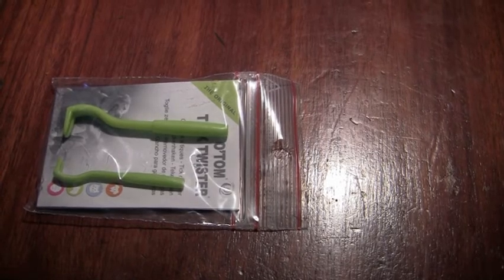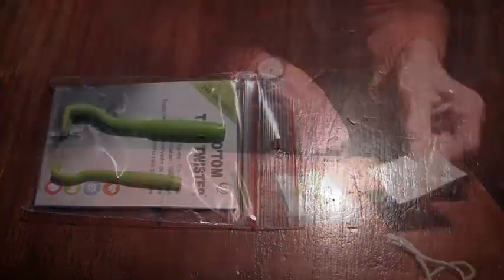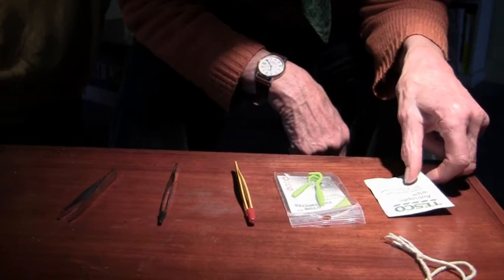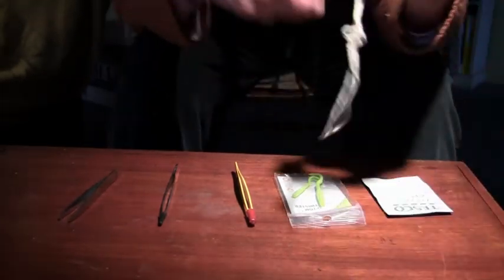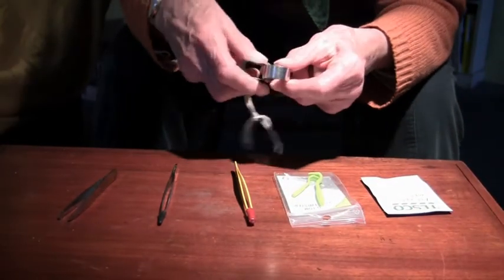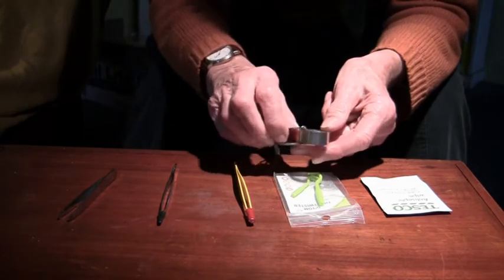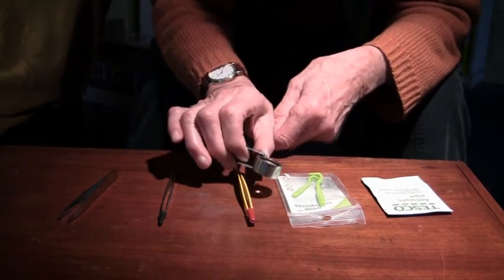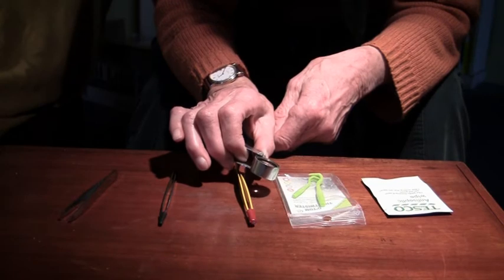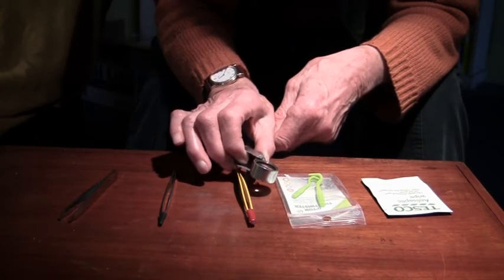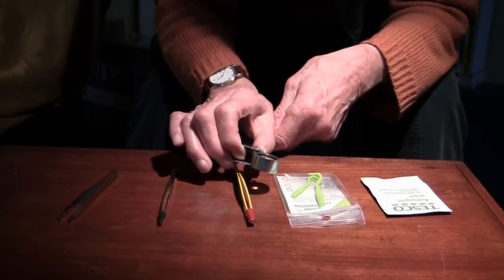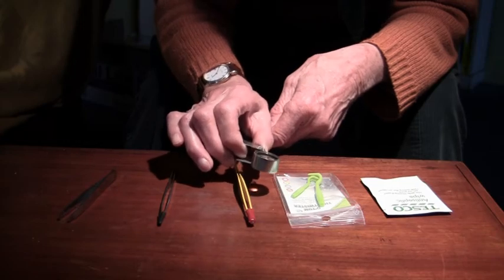And it's useful to have antiseptic wipes to wipe the bite after you've removed the tick. And I've always found that it's useful to have a really, really good small magnifying glass because some of these nymphs are really very, very tiny, and it's useful to be able to have a better look at them.